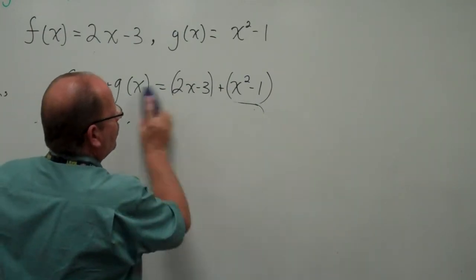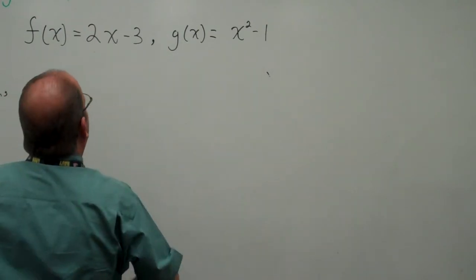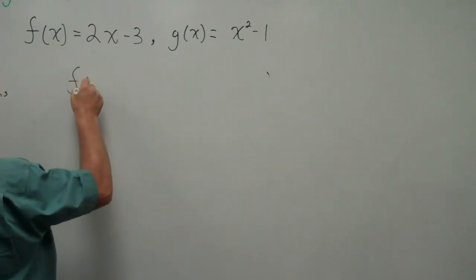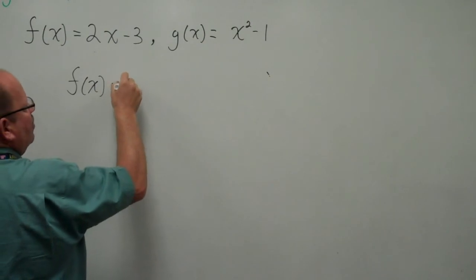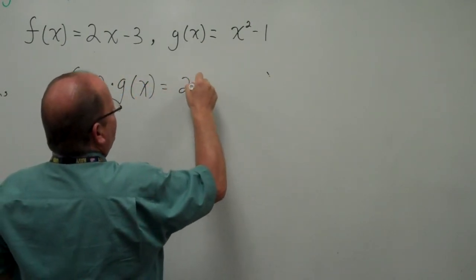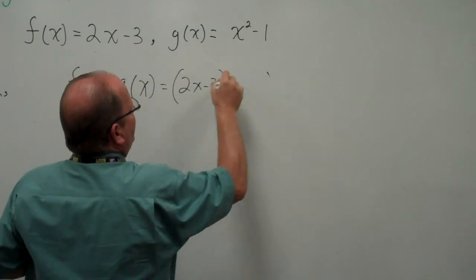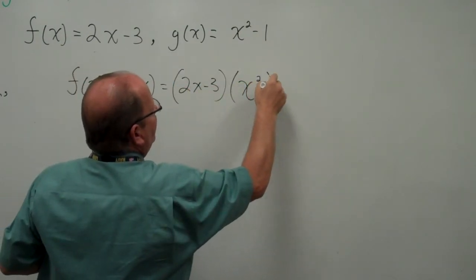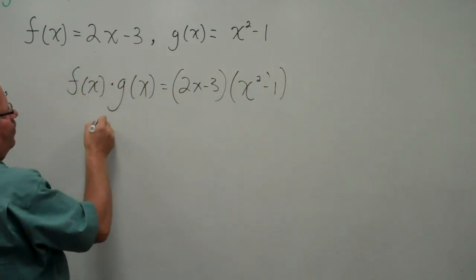f(x) times g(x), that's right, you guessed it, (2x - 3)(x² - 1). Do your FOIL first.